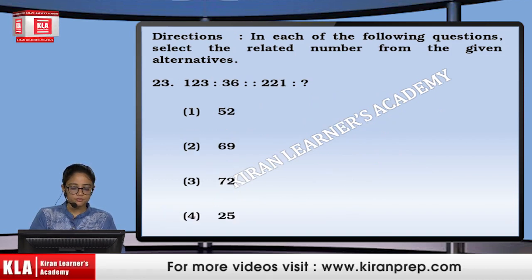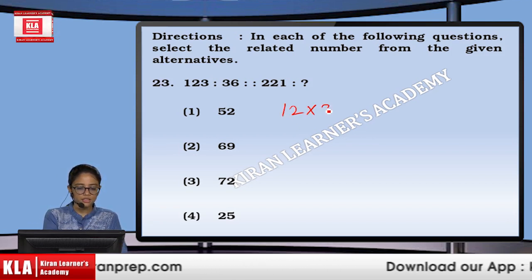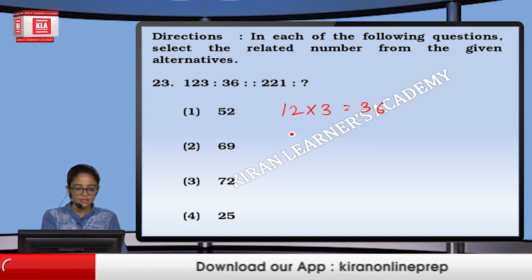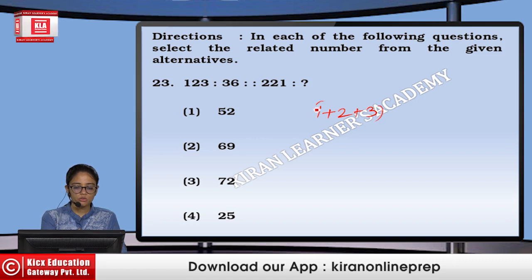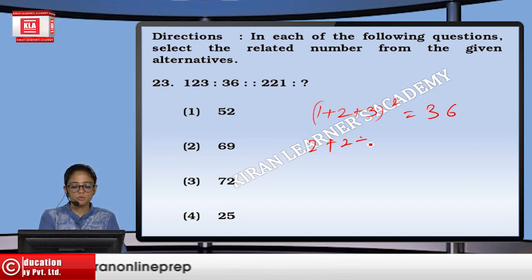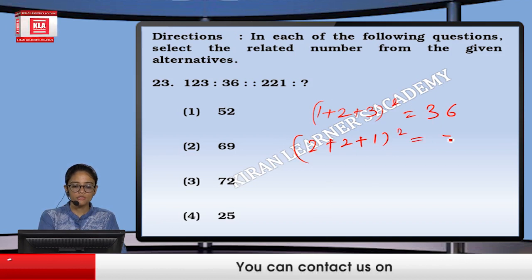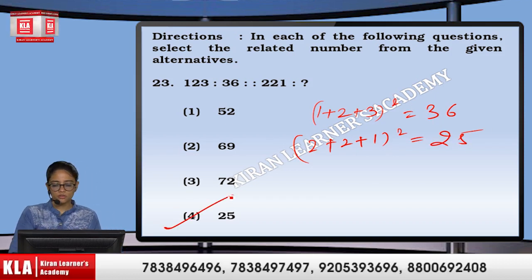Next, 1, 2, 3 and 36. See, 12 into 3 is 36. Similarly, 1 plus 2 plus 3, whole squared, is 36. Similarly, 2 plus 2 plus 1, squared, will give us 25. So the option will be option number 4.